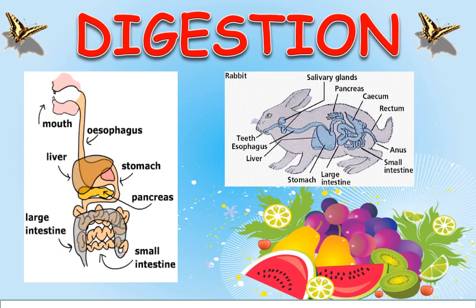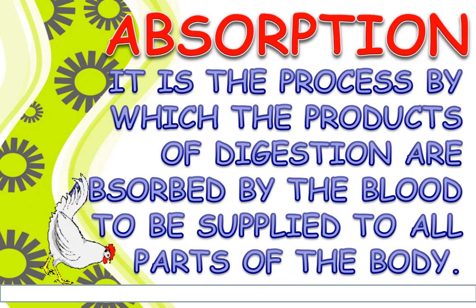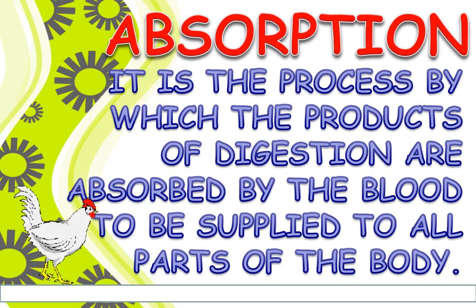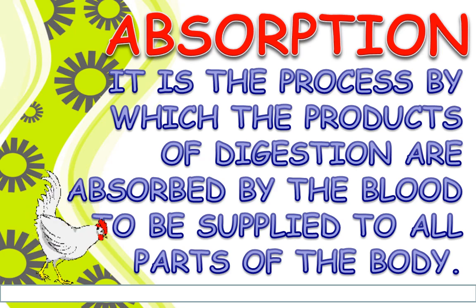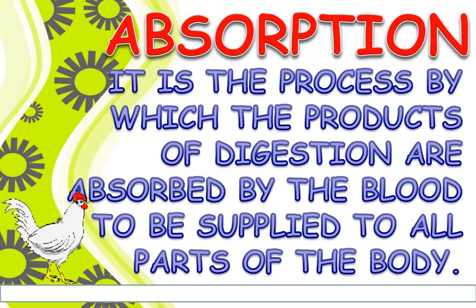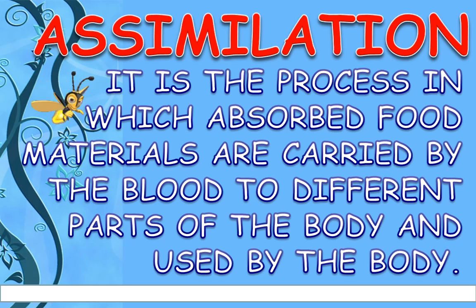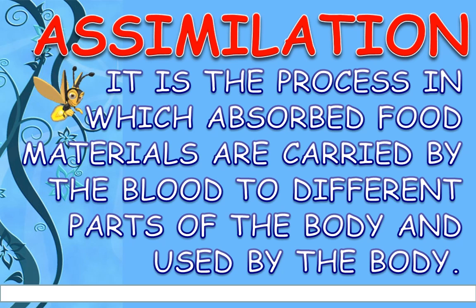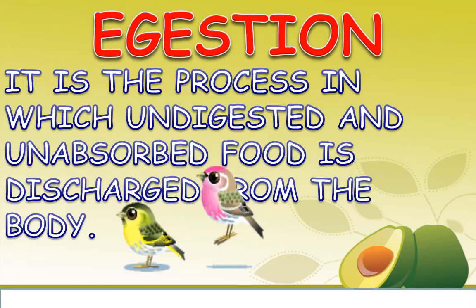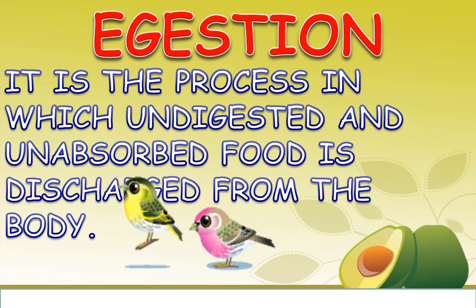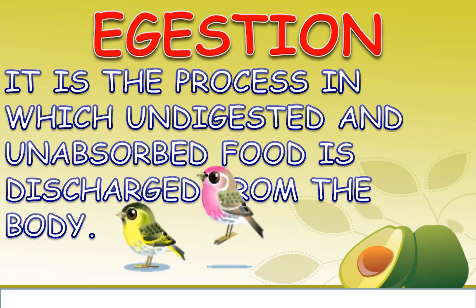The breakdown of complex components of food into simpler substances is called digestion. A digestive system is present in animals for carrying out digestion of food. After digestion, there is absorption of food — the process by which the products of digestion are absorbed by the blood to be supplied to all parts of the body. Next is assimilation, the process in which absorbed food materials are carried by the blood to different parts of the body and used by the body. Egestion is the last step, in which undigested and unabsorbed food is discharged from the body.